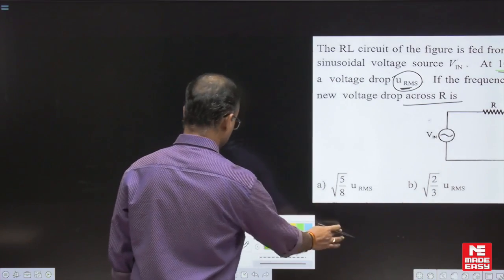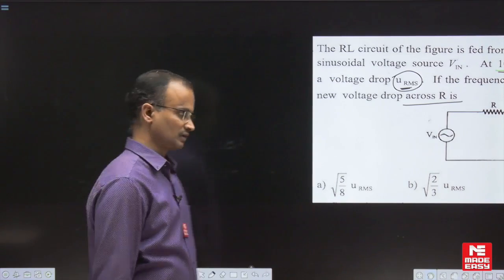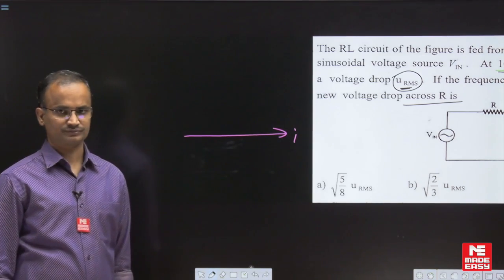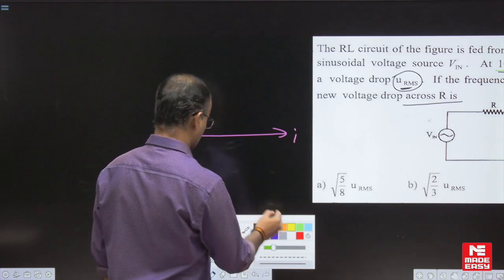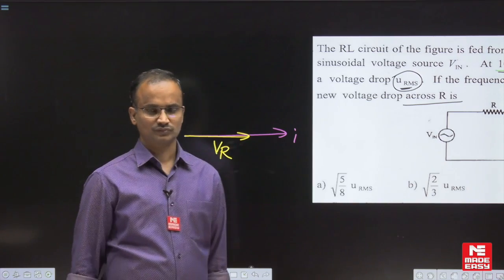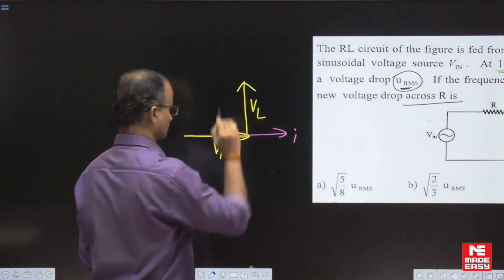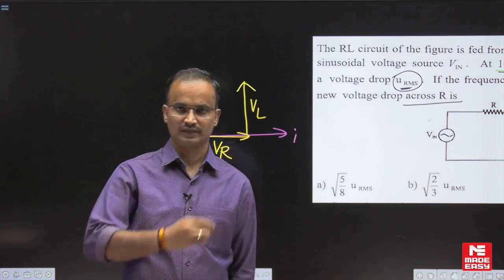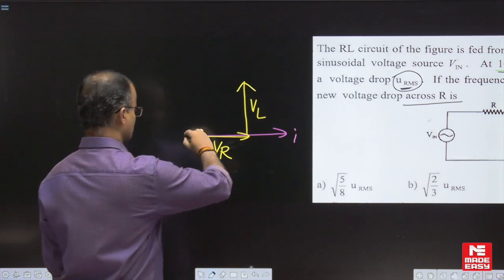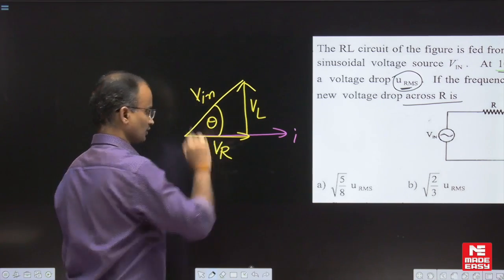First, if you observe the phasor diagram — in a series circuit, current through all elements is the same. To develop the phasor diagram, let us take the current as a reference. With respect to current, voltage across the inductor is leading by 90 degrees. The sum of these two voltages is equal to the input voltage.